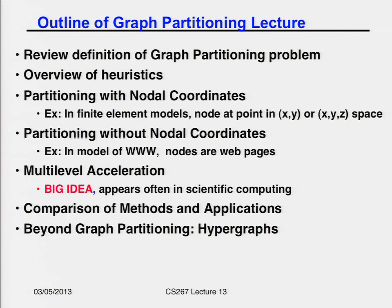There are a lot of graphs which come from, say, a finite element model or where you're modeling some sort of physical system, where the vertices in the graph actually come with spatial coordinates — XY or XYZ coordinates — because you're partitioning space. But there are also graphs that don't have XYZ coordinates; for example, in the model of the World Wide Web, the nodes are web pages with no XYZ, and in that case the only information we have is who is connected to whom, and our heuristics will depend on just the connectivity.